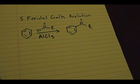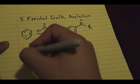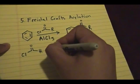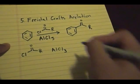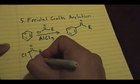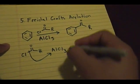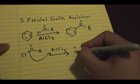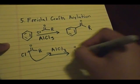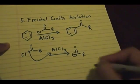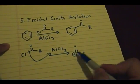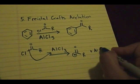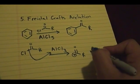Let's talk about the mechanism. You have your Cl-carbonyl-R and AlCl3. The double bond and the chlorine attach to the aluminum, and the product of this step is a carbonyl intermediate with R, and a positive charge on that carbon, plus AlCl4 minus.